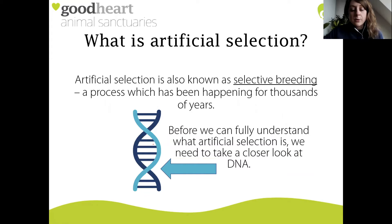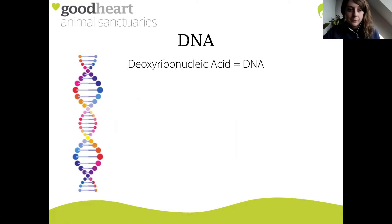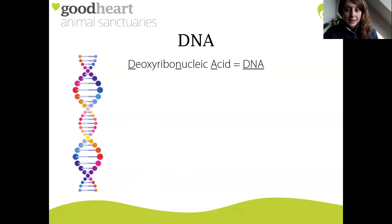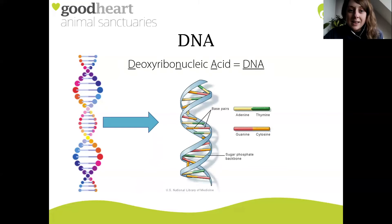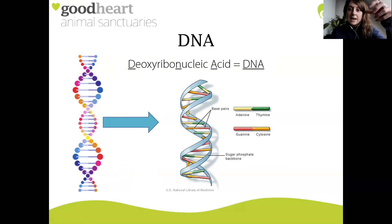Before we can fully understand what artificial selection actually is, we need to take a closer look at DNA. Now DNA is something many of you are familiar with, but what actually is DNA and how does it tie in to artificial selection? Well, DNA stands for deoxyribonucleic acid. And this is what DNA looks like - it's known as a double helix, which means it is a ladder-like structure which has been twisted to form a spiral.